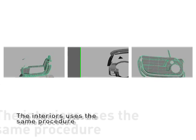In this process, the interiors of the vehicle are made using the same procedure as in the creation of mechanical pieces, such as the motor, suspension, and anything else required from the vehicle to be represented in three-dimensional detail.